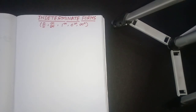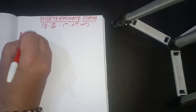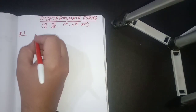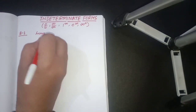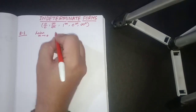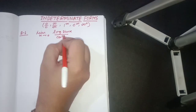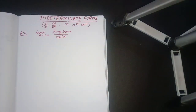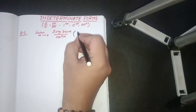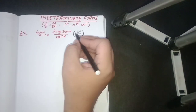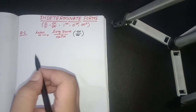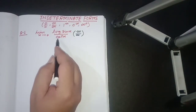Now we have to see some examples based on L'Hôpital's rule and that specific form of limits. Suppose we have to evaluate the limit as x tends to 0 of log(sin x) upon cot x. If we put in the values, we see that it is of the form infinity upon infinity. In such cases we have to use L'Hôpital's rule by differentiating the numerator and denominator separately.